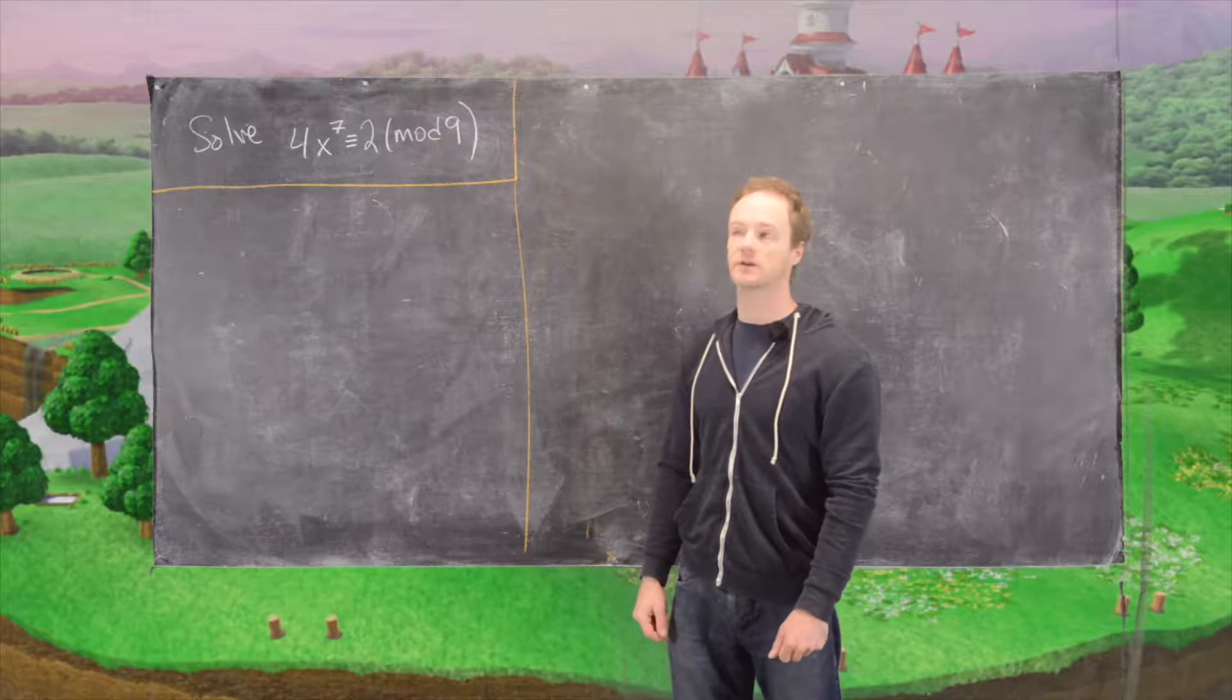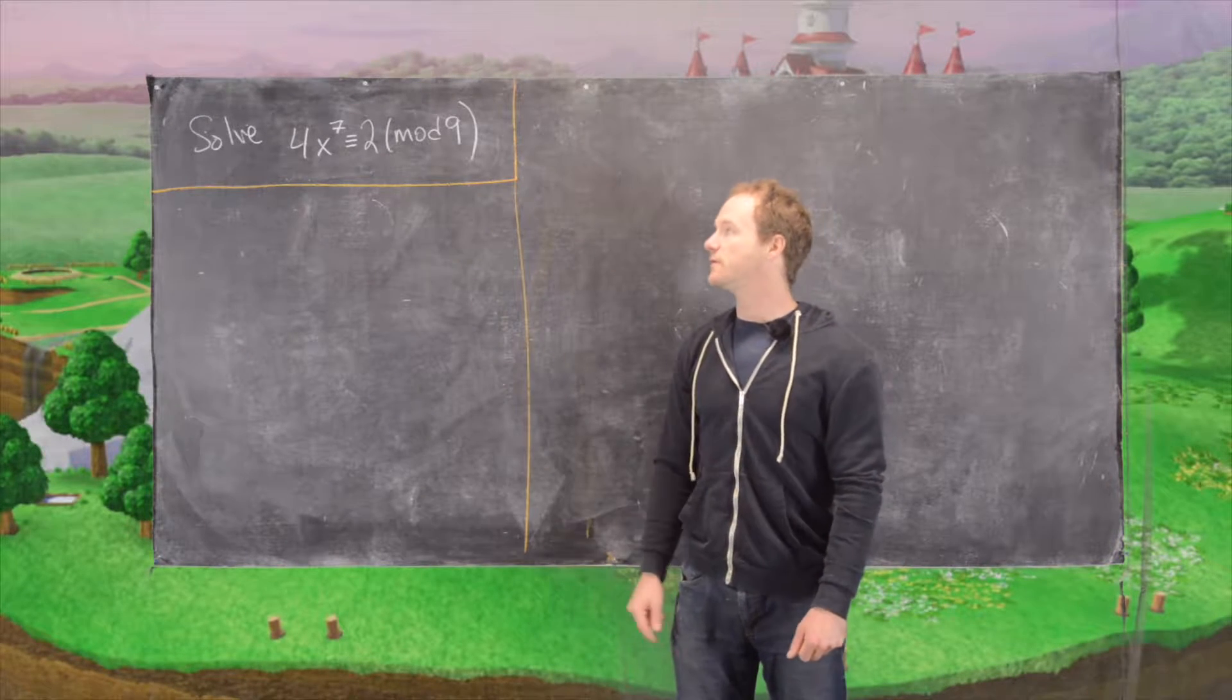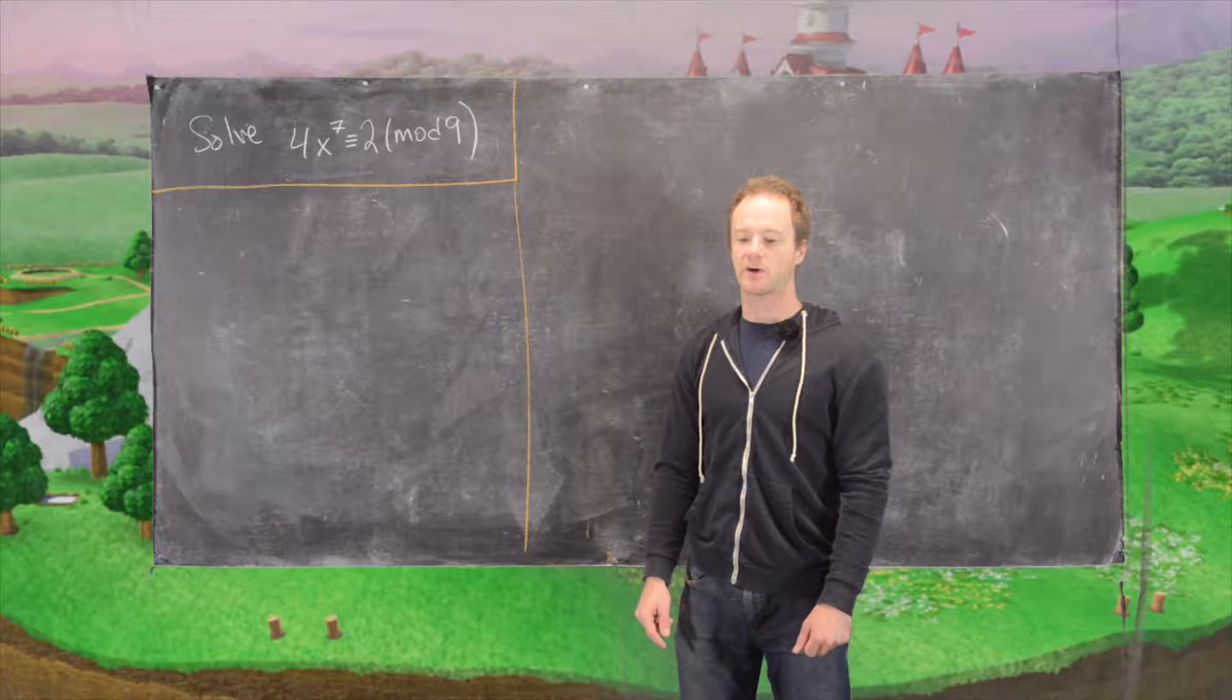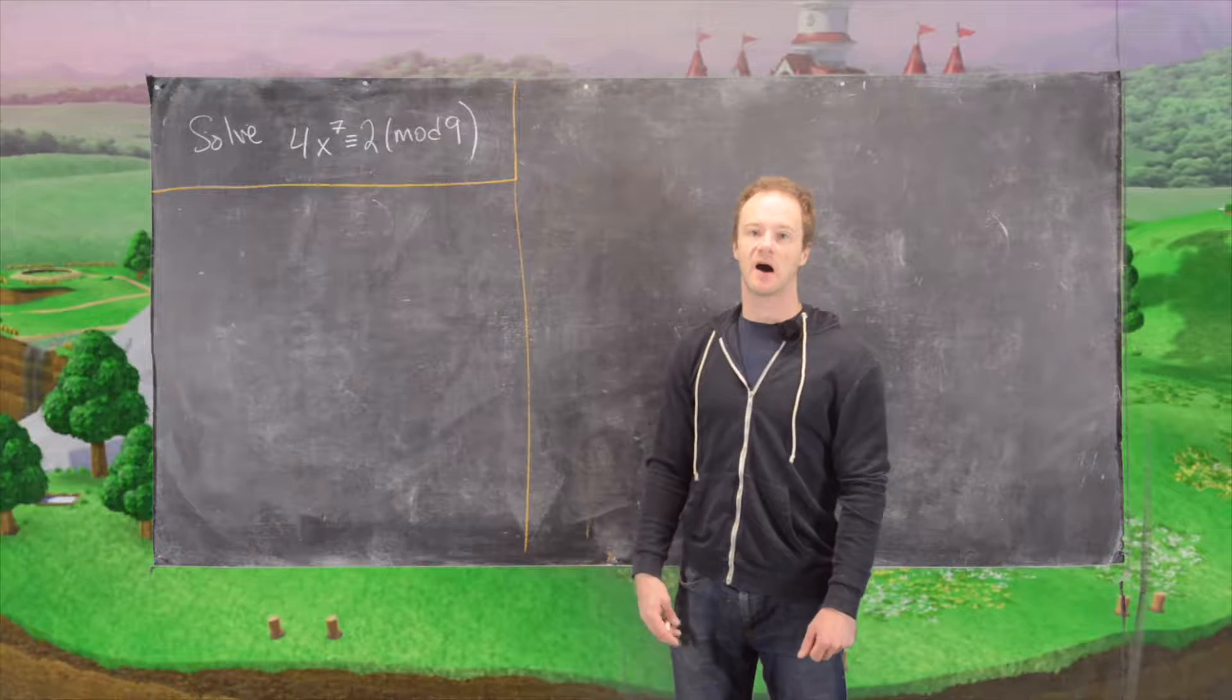Okay, in this video we're going to look at the following congruence. So we want to solve 4 times x to the 7th power is congruent to 2 mod 9.